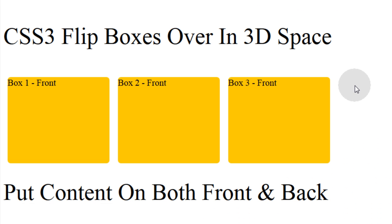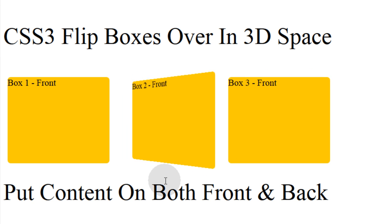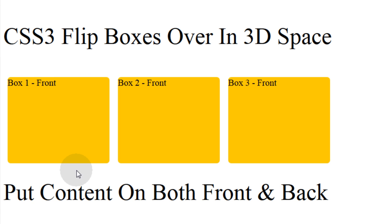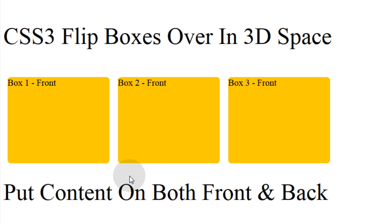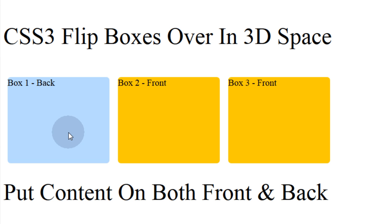First let's take a look at the finished effect so you know what you're getting yourself into. I have three boxes here and when I put my mouse over them they flip. Keep in mind that the animation would look a whole lot smoother on your machine because the frame rate of my recorded video is going to make the animation appear a little bit choppy, but trust me it's smooth as butter. You can put content on the front and the back of these elements. Really there's two elements stacked in there back to back. By default the one on the back is flipped 180 degrees, but when the animation occurs it rotates back to zero degrees, and the one originally on the front rotates to 180 degrees.